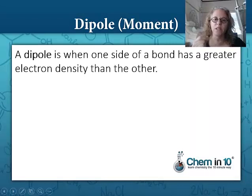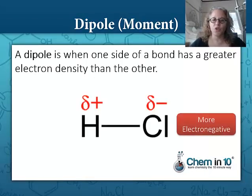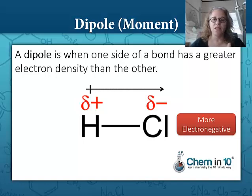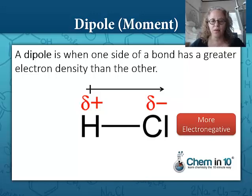A dipole is when one side of a bond has a greater electron density than the other. In this case, because chlorine is more electronegative, it's going to have more electron density. We write the dipole arrow facing the chlorine, where the greater electron density is, and the plus end of that arrow where the relatively positive hydrogen is.